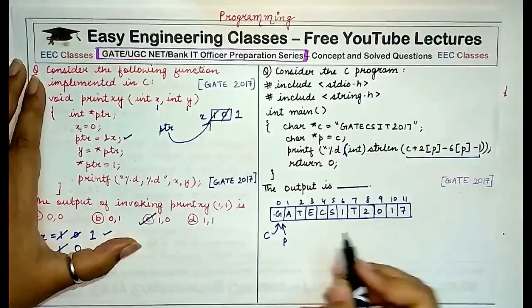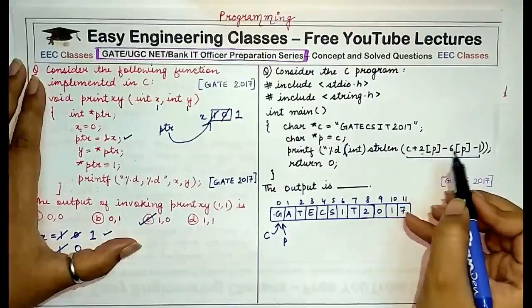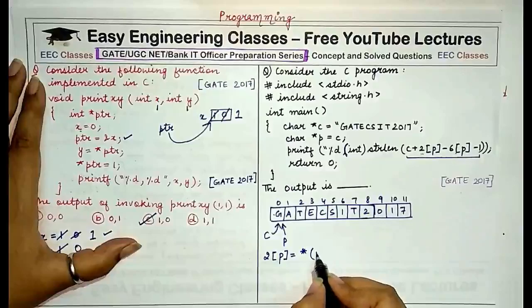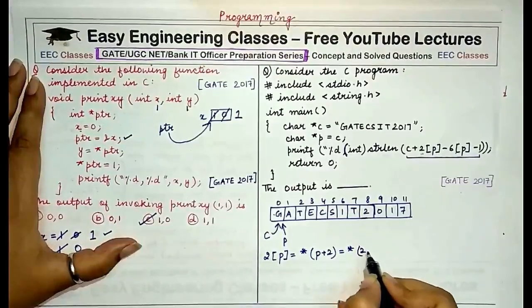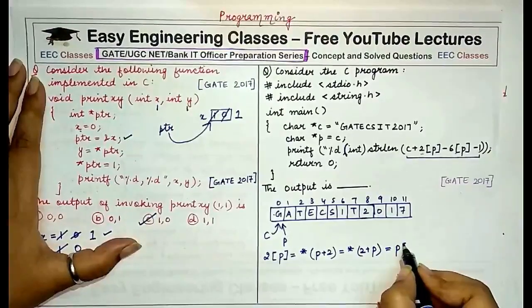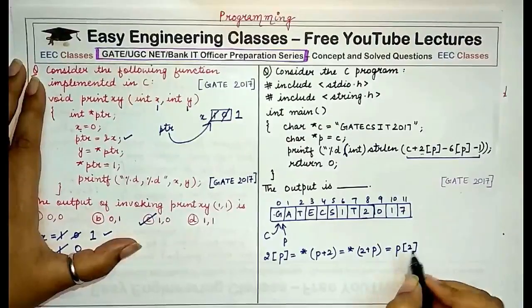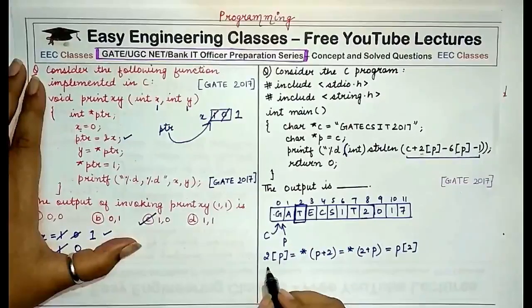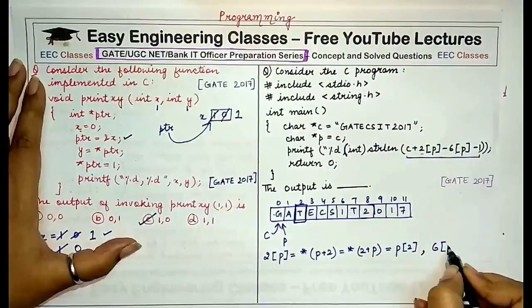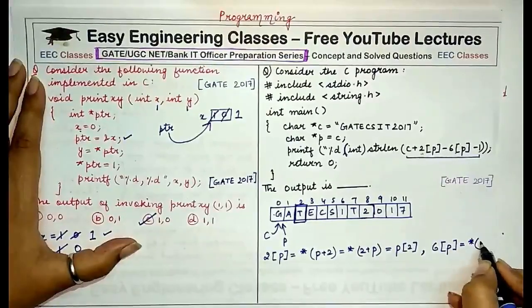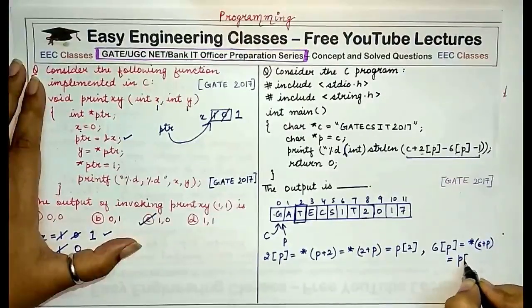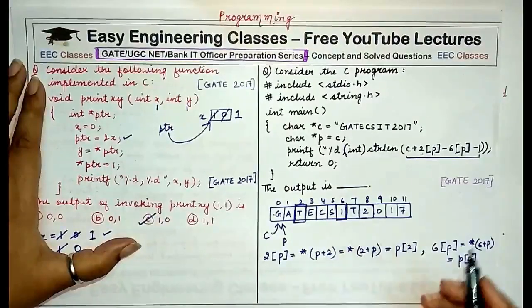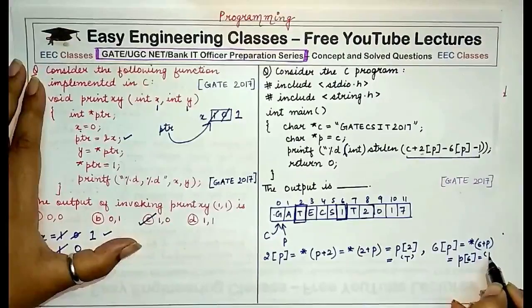We have to find the string length of the expression c + 2[p] - 6[p] - 1. Now, 2[p] is exactly equivalent to *(p + 2), meaning we are referencing the second index of the character array. Since p points to the start, the second index is 't'. Similarly, 6[p] equals *(p + 6), which is the sixth index of the array — the character 'i'.